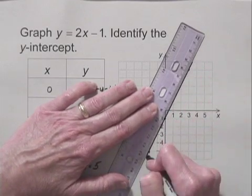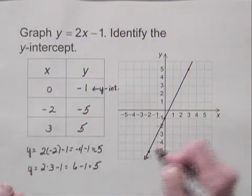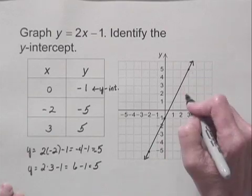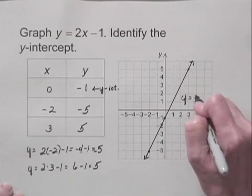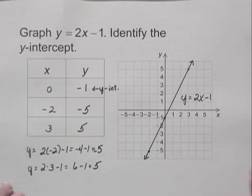Connect the points. And we'll label the graph with the equation y equals 2x minus 1.